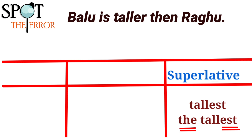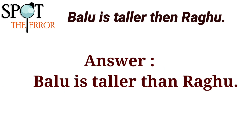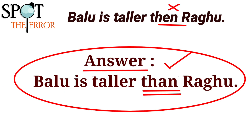So that is the rule and that is the error. Now rewrite the above sentence correctly. The answer is: Balu is taller than Ragu. Thanks for watching, may God bless you all.